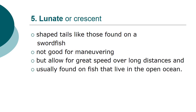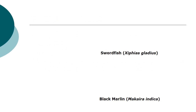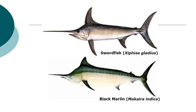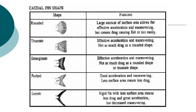The lunate or crescent-shaped tail, like those found on a swordfish, is not good for maneuvering but allows for great speed over long distances. This shape is usually found on fish that live in the open ocean, such as the swordfish and black marlin. In summary, caudal fin shapes may be rounded, truncate, marginate, forked, or lunate — each with different functions according to the fin type, fish species, and the specific environment in which the fish lives.